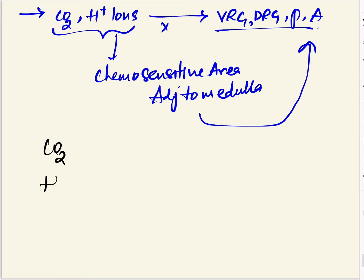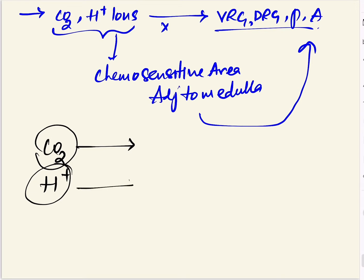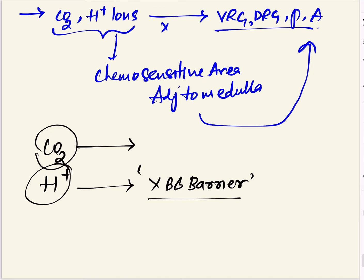Among carbon dioxide and hydrogen ions, carbon dioxide is more effective at stimulating the center. This is because hydrogen ions cannot cross the blood-brain barrier, so they cannot reach the chemo-sensitive area and therefore do not show as much direct effect there — only indirect effect. Carbon dioxide, however, is found in the cerebrospinal fluid and directly affects the center.